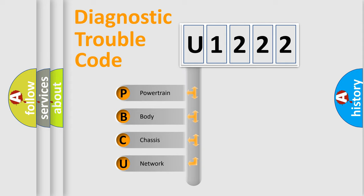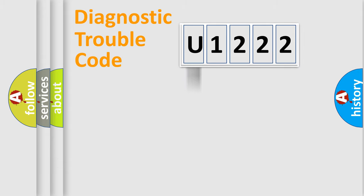We divide the electric system of automobiles into four basic units: Powertrain, Body, Chassis, and Network. This distribution is defined in the first character of the code.